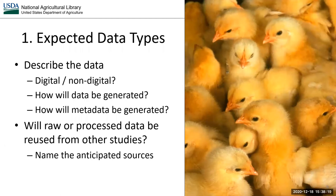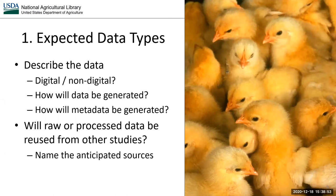We begin our plan by outlining expected data types. This section covers what you will produce. Describe the type of data — for example, digital or non-digital — and how they will be generated. Different methods include lab work, field work, surveys, custom software, and so on. What kind of metadata will be generated, and how? Will metadata be manually entered or automatically generated by the data collection method? Following a specific community-approved metadata standard consistently is encouraged to facilitate wider understanding and reuse of the data.